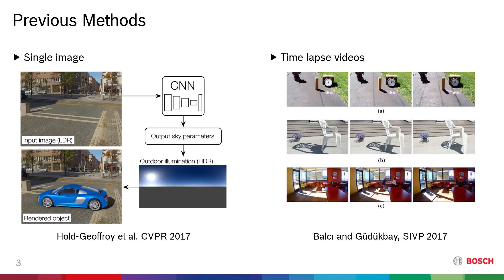There were several methods for outdoor lighting estimation. One branch investigated single image-based lighting condition estimation. Papers with this approach get an input low dynamic range image and output either a sky map texture or sky parameters required to build a sky map texture.